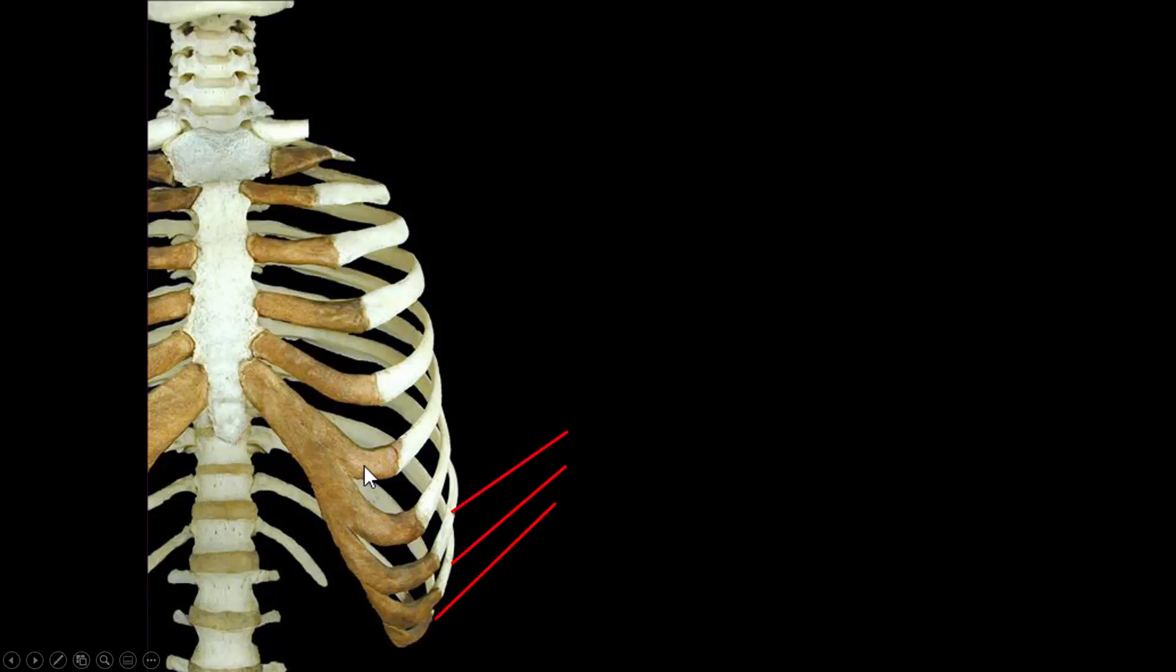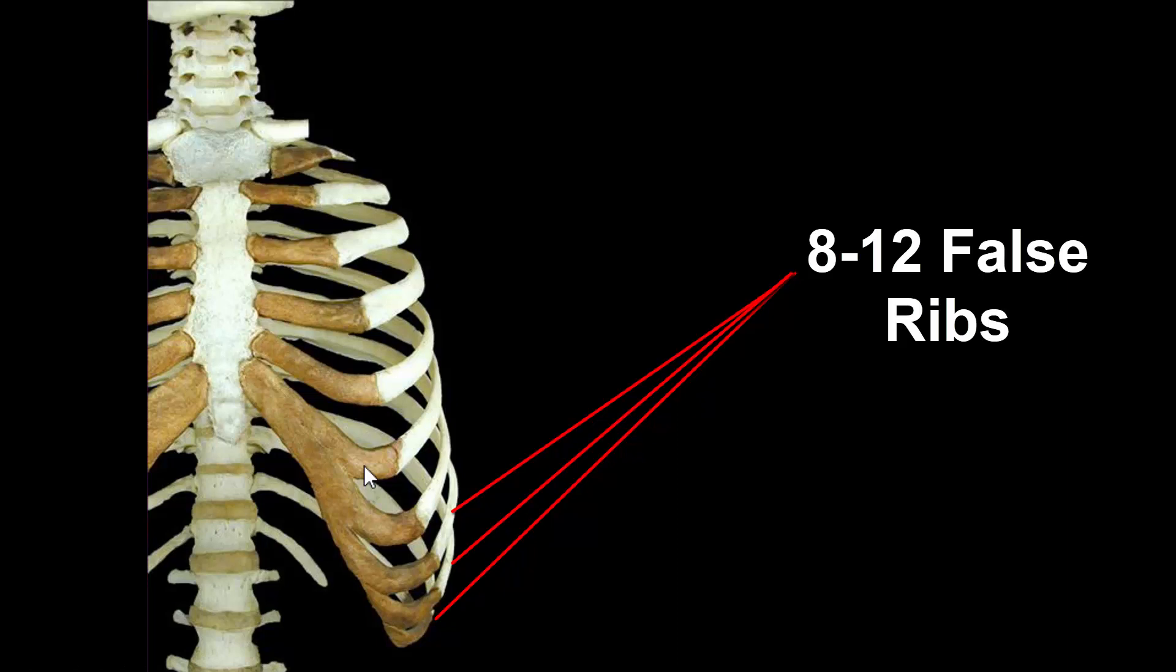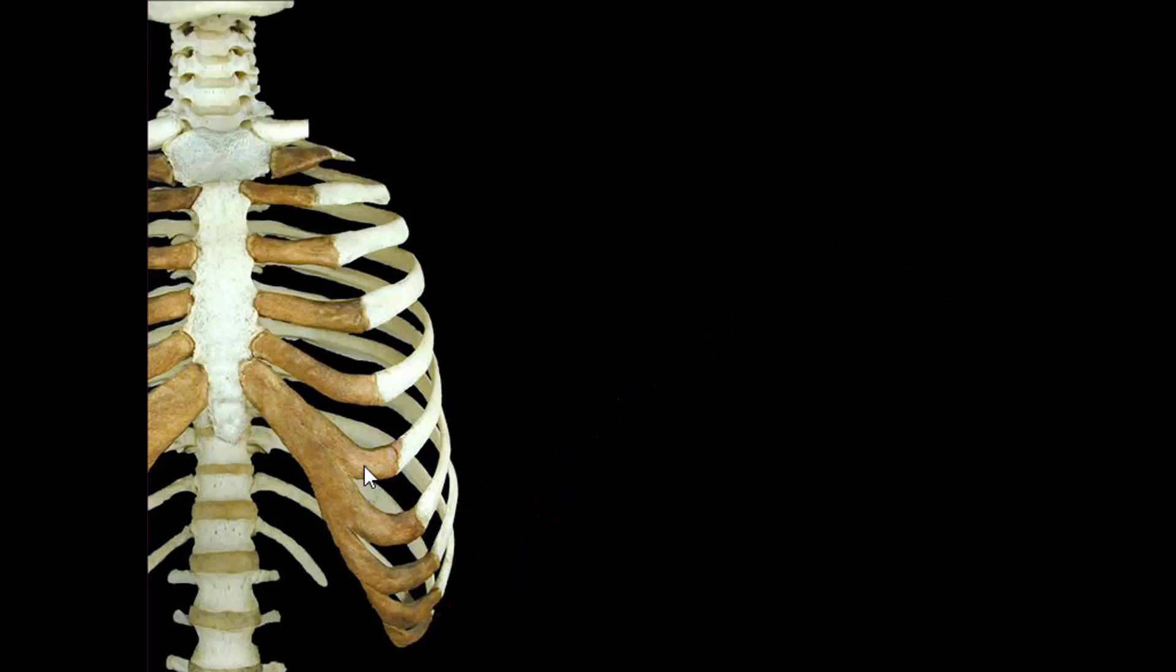Now ribs 8 through 12 are false ribs, with 8 through 10 having costal cartilage which attach to each other and then the cartilage of the 7th pair of ribs. Now 11 and 12 don't attach at all to the sternum, so we call those floating ribs.